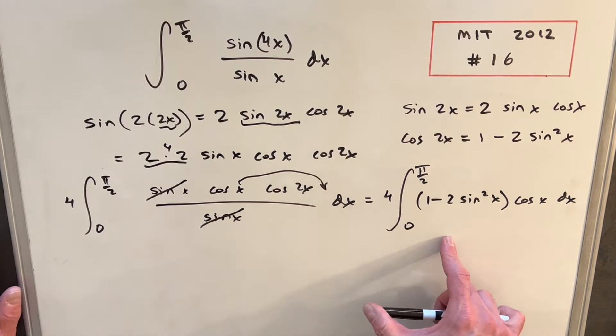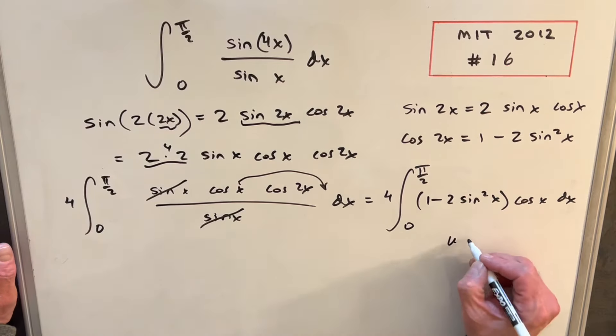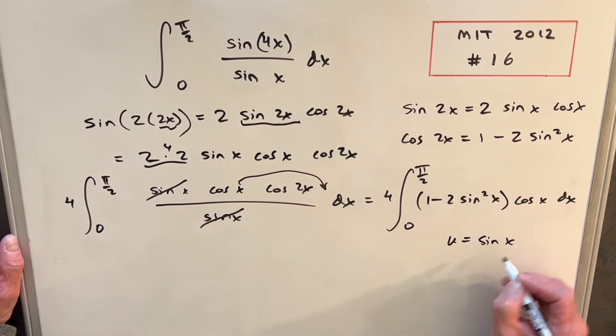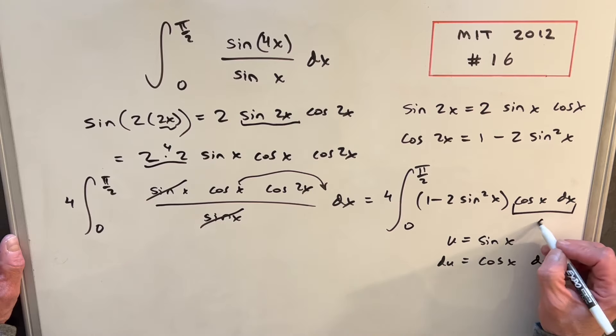But now from here, we're perfectly set up for a u substitution. This will work if we make our u equal to sine x, okay, because then our du will just be cosine x dx, and we have our du right there.